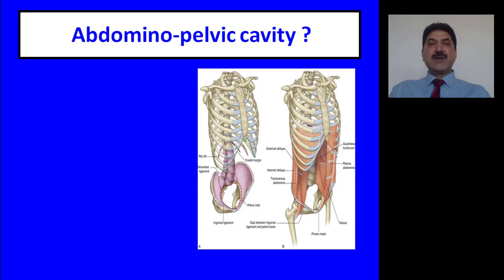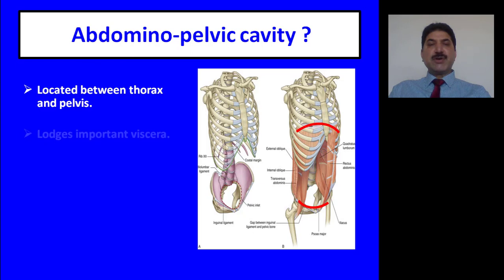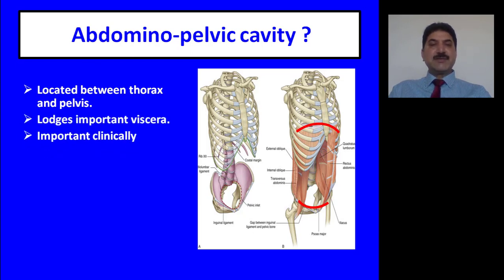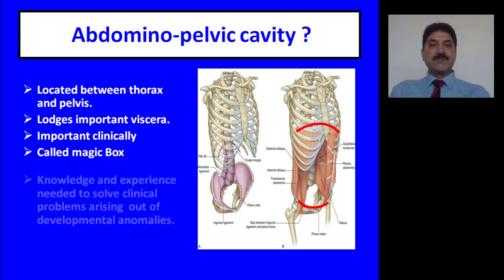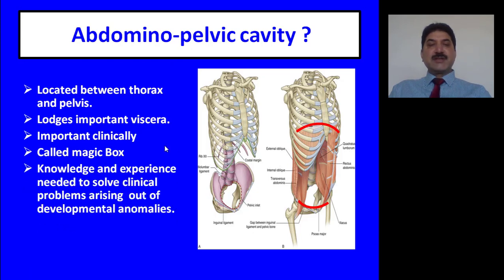Abdominal pelvic cavity is located between the thorax and pelvis. It lodges important abdominal and pelvic viscera and is important clinically. Surgeons call the abdominal pelvic cavity a magic box. Knowledge and experience is needed to solve clinical problems arising out of developmental anomalies.